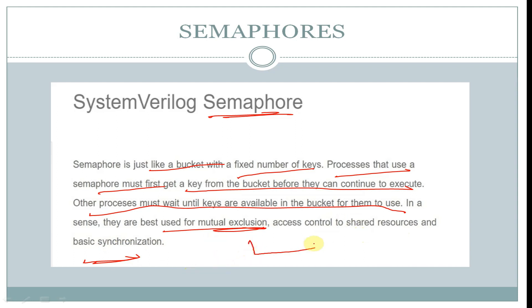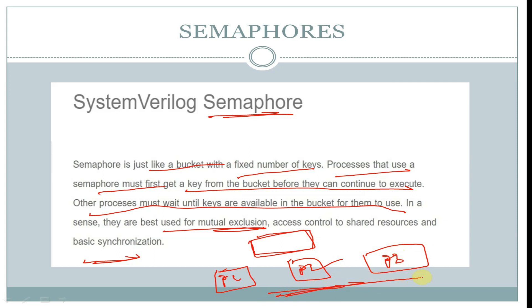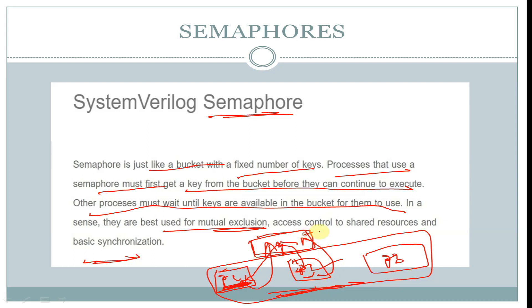If we declare a semaphore — which is like a bucket of keys — and we have three processes, process 1, process 2, and process 3, all using this semaphore, then until and unless a process gets the key, it cannot start execution. After completing its execution, it should put the key back into the semaphore. Then process 2 can get the key, start execution, put the key back, and that key can be used by process 3. After process 3 completes, it should also put the key back.